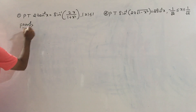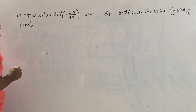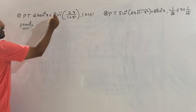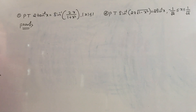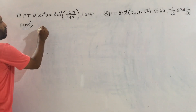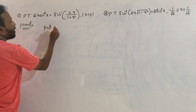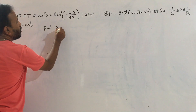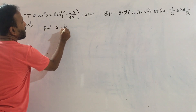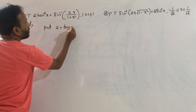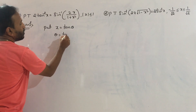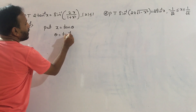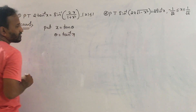Proof. So here, the RHS function is sin inverse and the LHS function is tan inverse. Put x equal to tan theta. Therefore, theta equal to tan inverse x.